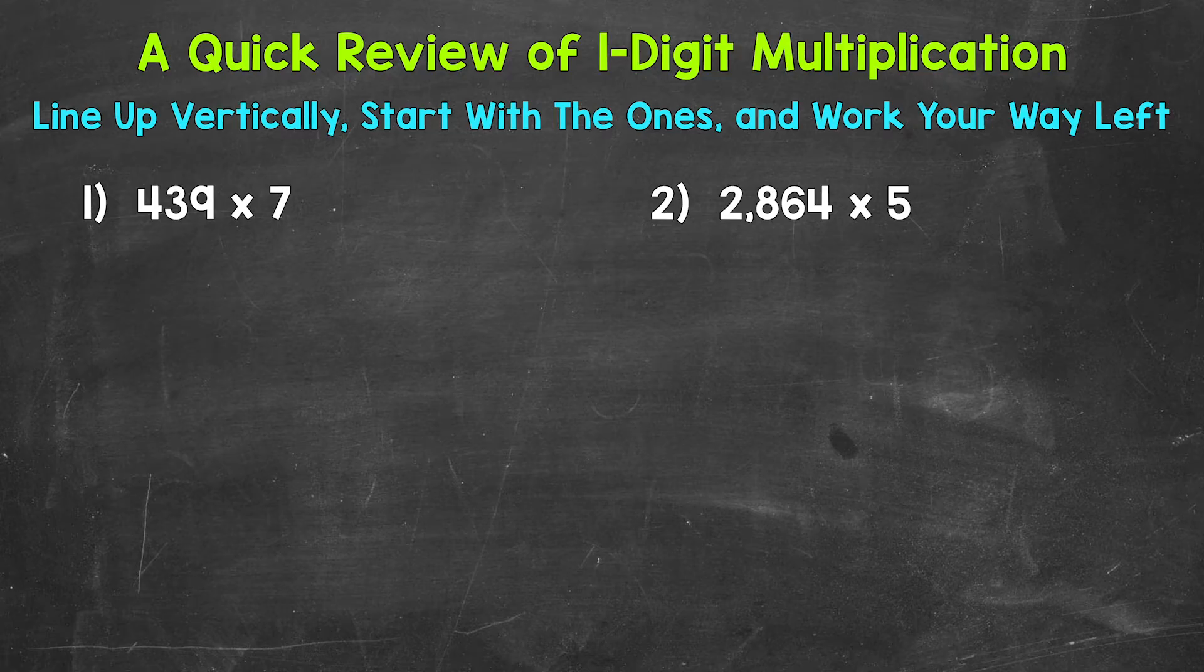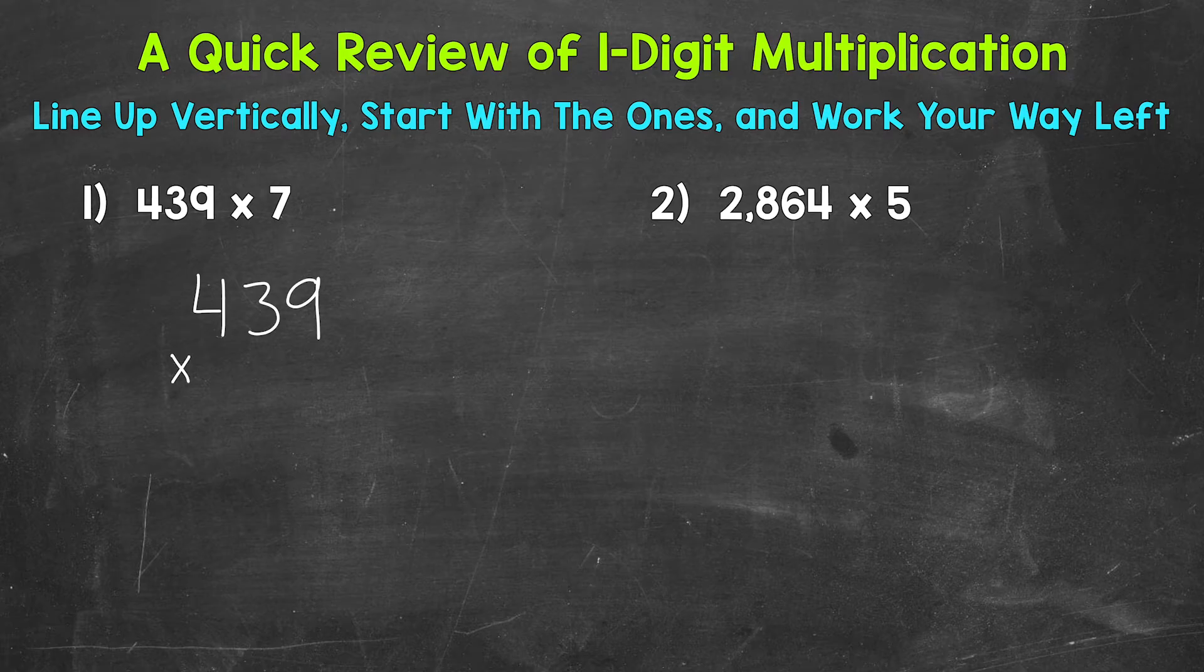Let's jump into number one, where we have 439 times 7. Now the first thing that we're going to do, we're going to line this up vertically. So we're going to rewrite it up and down. So let's go below the problem here, and we have 439 times 7.